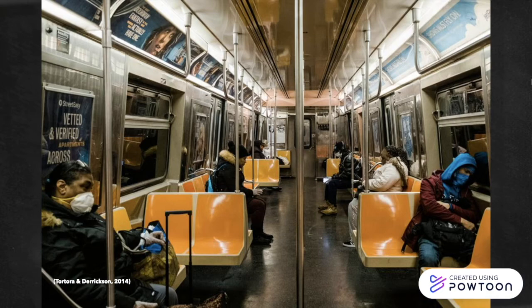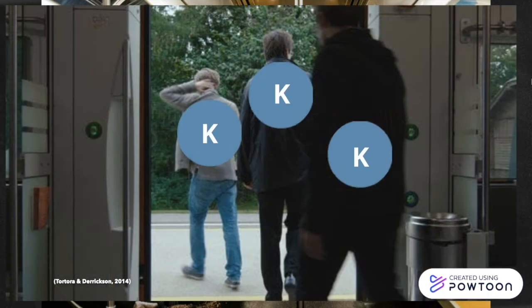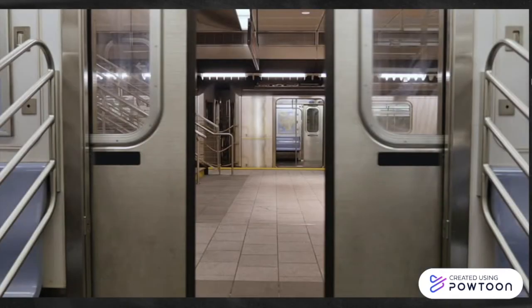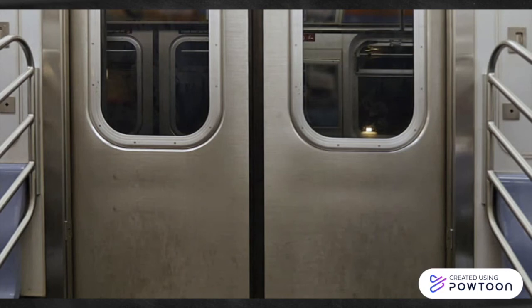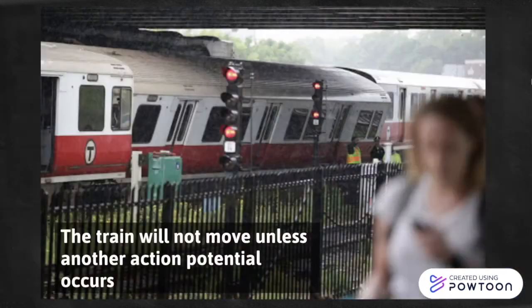The conductor sees that too many potassium passengers are trying to leave the subway, and the train is getting a little too empty. Lastly, the conductor decides to close the potassium doors so no one else can leave, and we are back at our resting capacity. The train will not move unless another action potential occurs and waits for more passengers to get on.